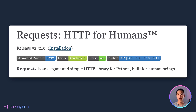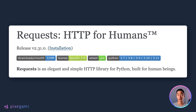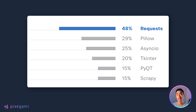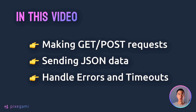The requests module in Python lets you make HTTP requests so that you can interact with any website or API directly from your Python app. It is one of the most highly downloaded Python modules and also one of the most widely used. In this video, we'll walk through how to install the module and how you can use it.